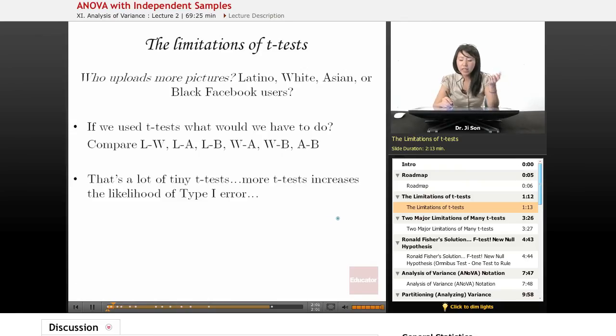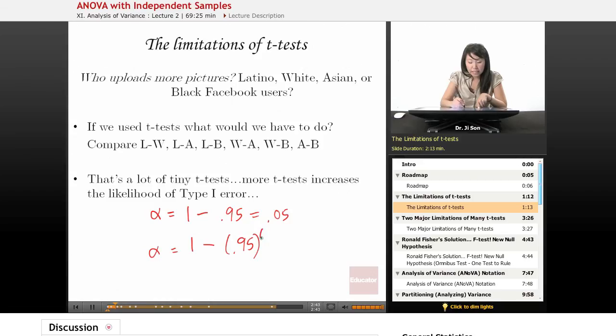That's a lot of tiny t-tests, and the more t-tests you do, the more that increases your likelihood of Type I error. Previously, to calculate Type I error, we looked at 1 minus the probability that you would be correct, and that was something like 0.05. But now that we want to calculate the probability of Type I errors for six t-tests, we have to think back to our probability principles. Alpha is going to look something like 1 minus whatever your correct rate is, to the sixth power.